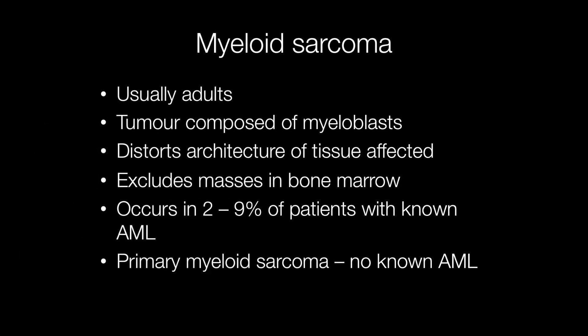Myeloid sarcomas are extramedullary, meaning they occur elsewhere other than the bone marrow. They are composed of myeloblasts and distort the tissues affected. Between two and nine percent of patients with known acute myeloid leukemia develop myeloid sarcomas. Sometimes they can occur before the diagnosis of AML, and this is referred to as primary myeloid sarcoma.